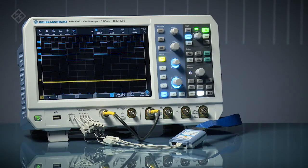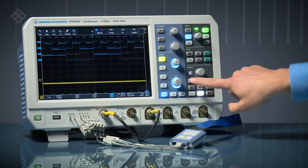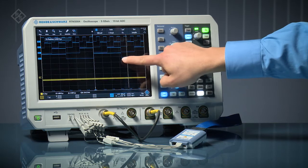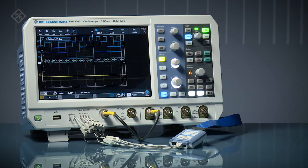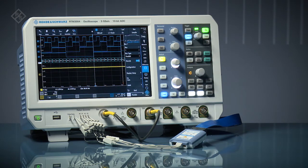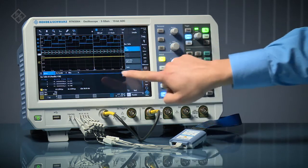Rohde & Schwarz RTM 3000 Series Oscilloscopes feature a 16-channel integrated logic analyzer option. Use the digital channels to see timing relationships, group multiple signals into a bus and see bus values, or view bus activity in a table complete with time tags.